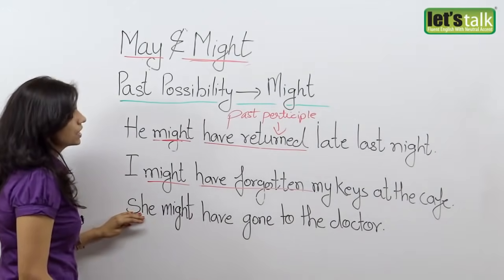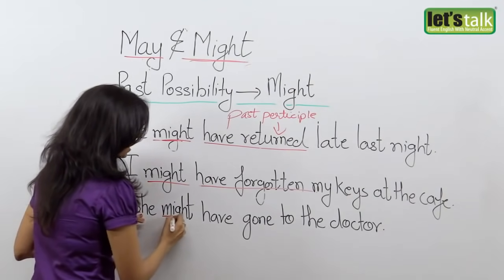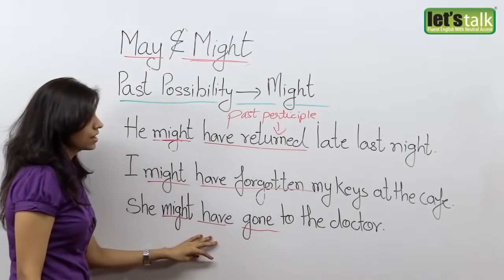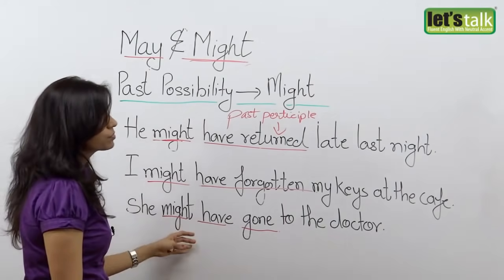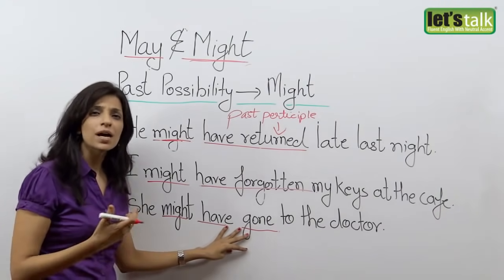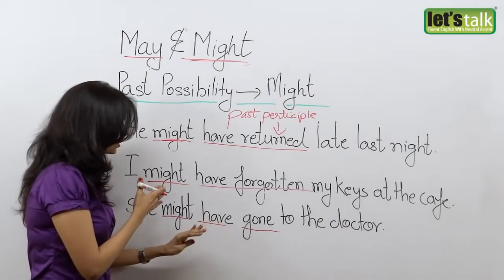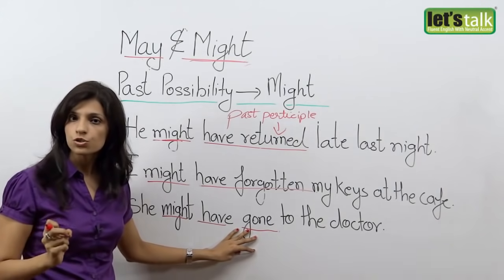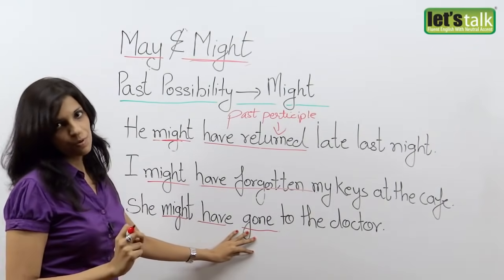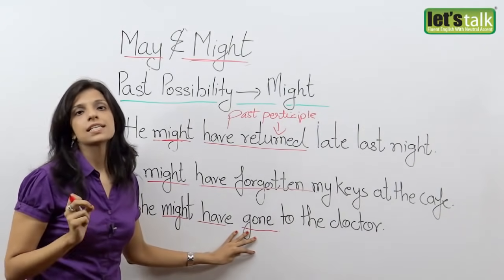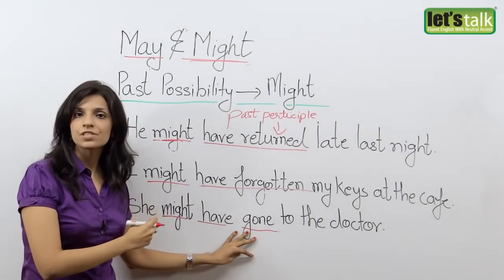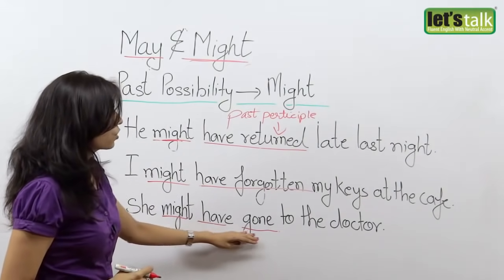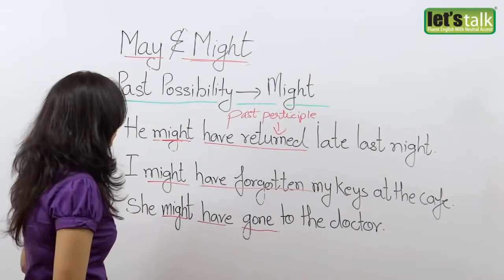In my last example, 'She might have gone to the doctor.' Again, you're not sure — probably last week she might have gone to the doctor. We use this because you are not sure, but there is a possibility that she may have visited the doctor in the past. So: she might have gone to the doctor.